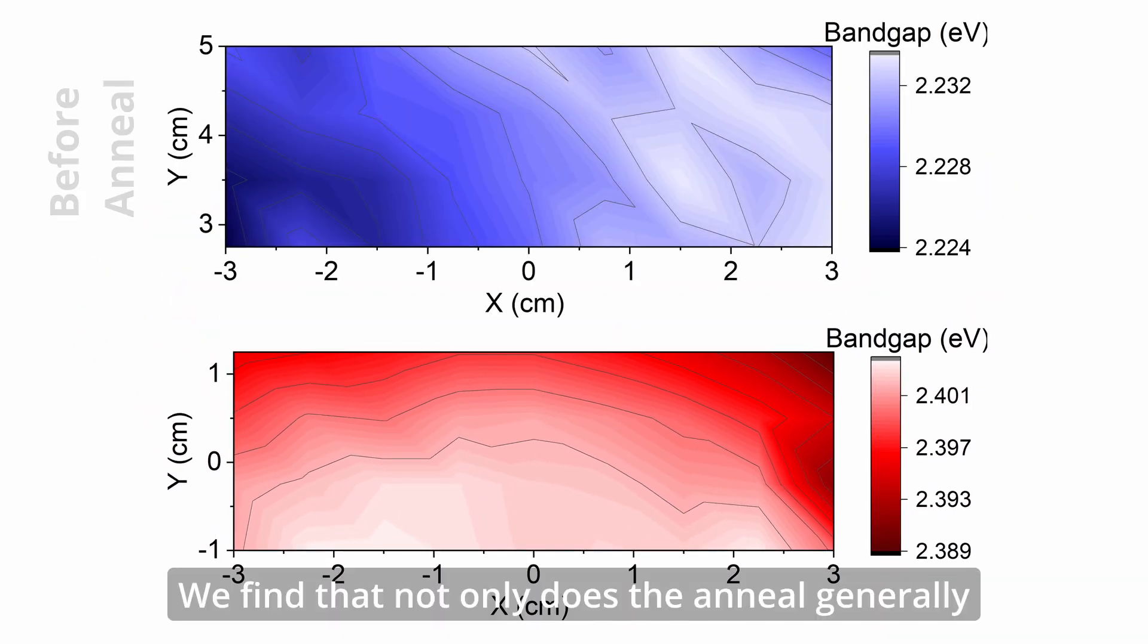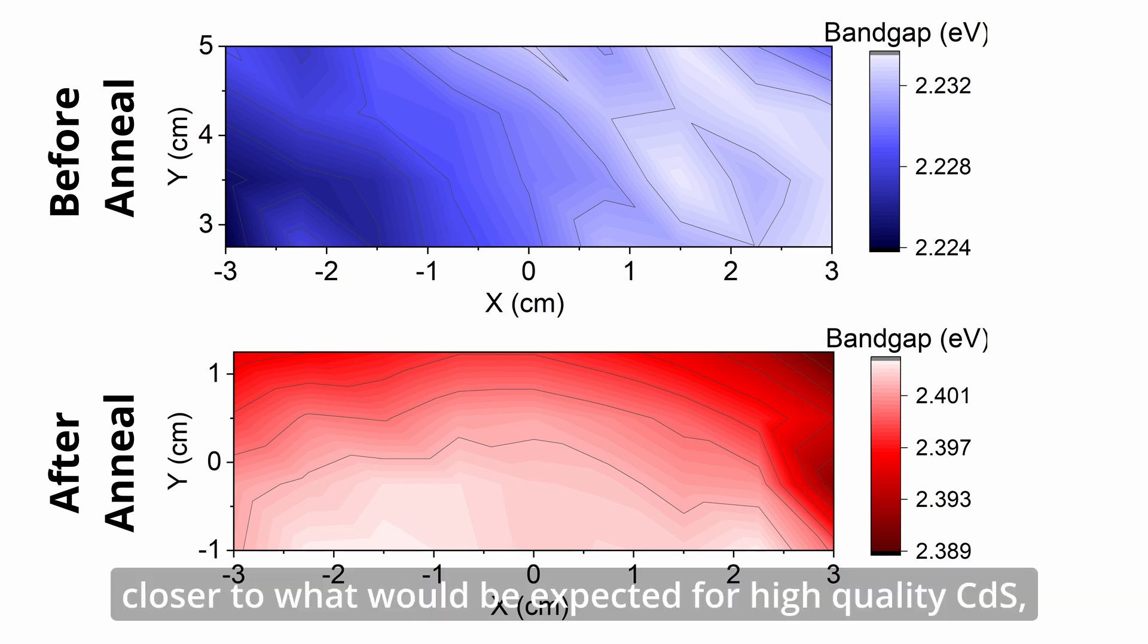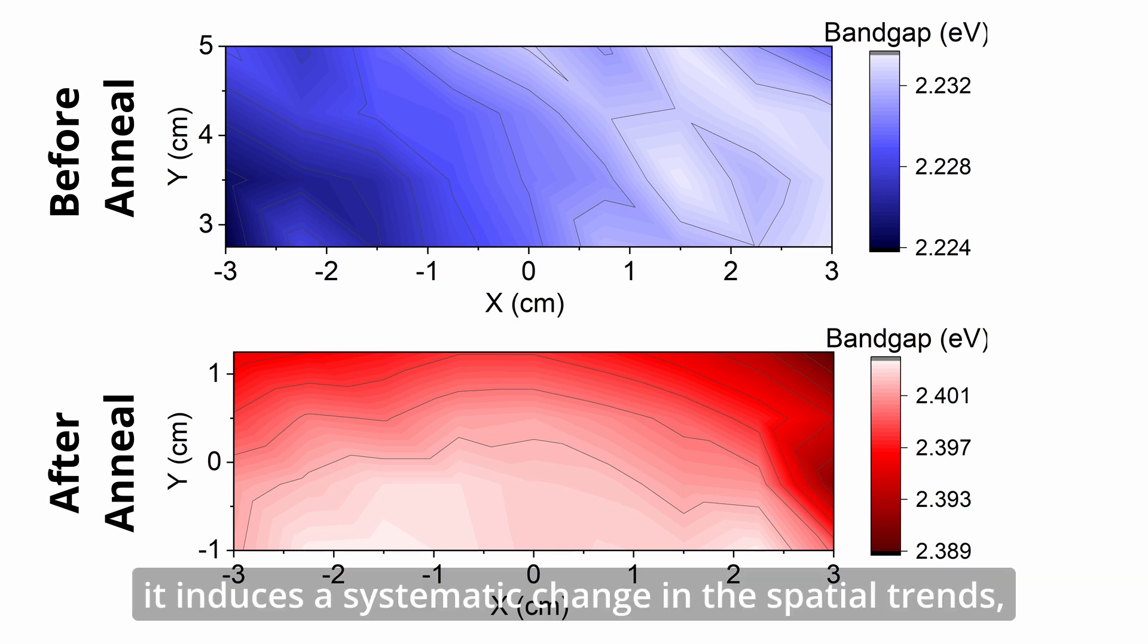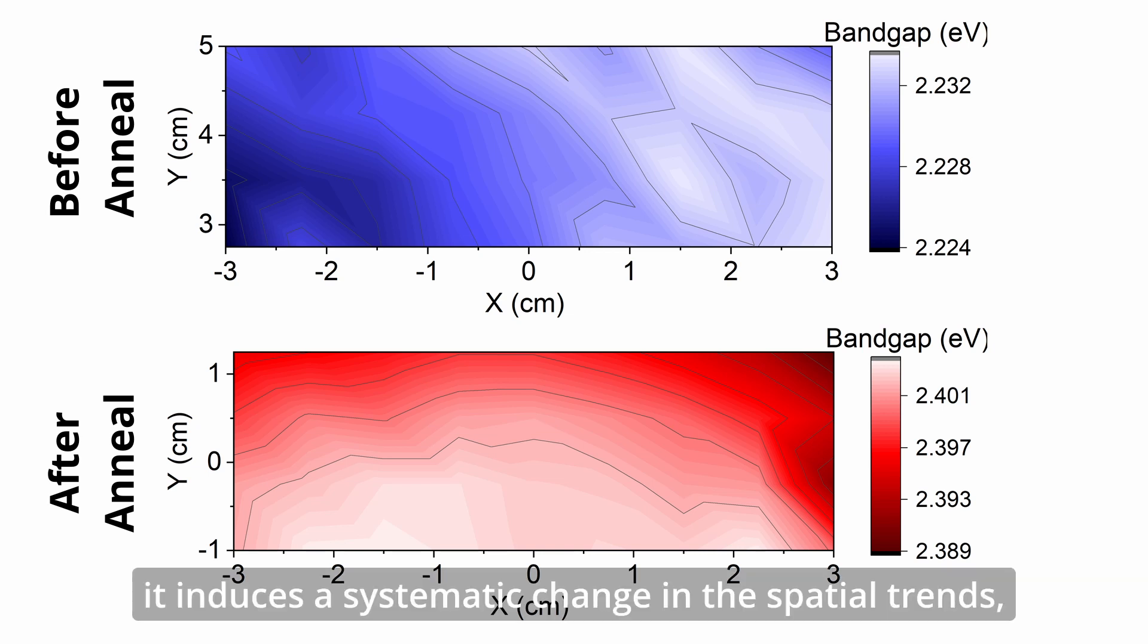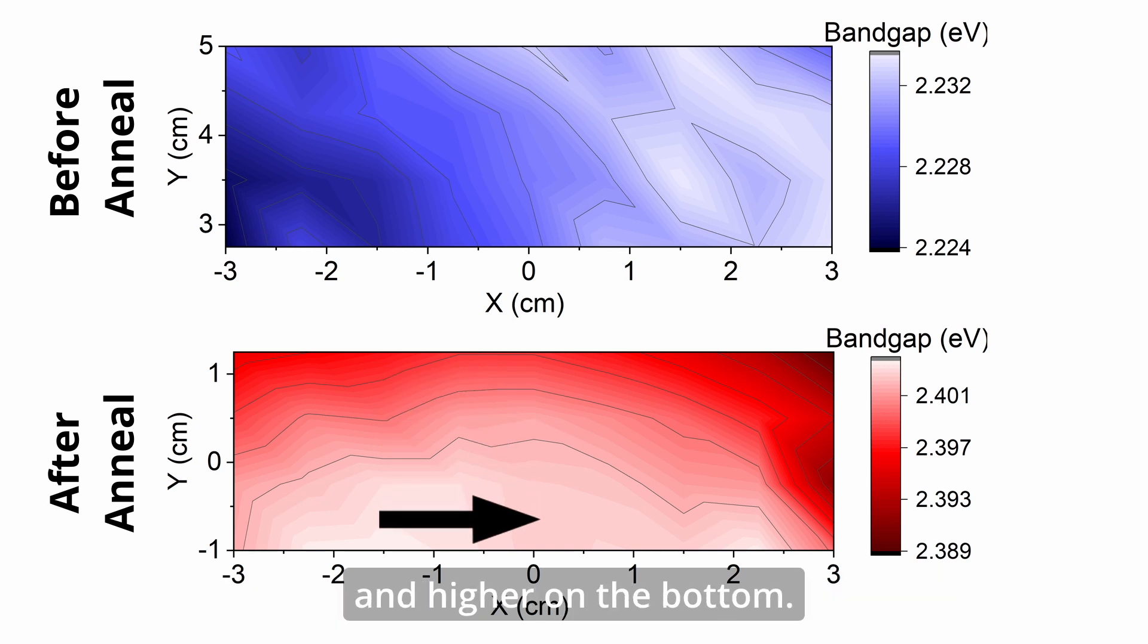We find that not only does the anneal generally increase the band gap energy up closer to what would be expected for high quality cadmium sulfide, it induces a systematic change in the spatial trends where now the band gap is lower on the top and higher on the bottom.